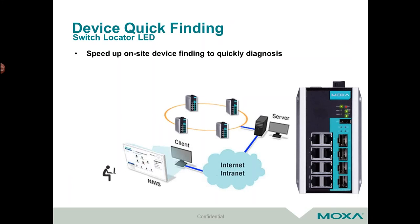Another thing NMSs can do that's really useful in troubleshooting is quick device finding. Say you have a whole cabinet or panel full of switches and one switch is acting up. On the NMS side, it's pretty easy to tell which switch has problems. But if you have to pull the plug from that switch in the cabinet, or you're working with someone remote at that cabinet, it's pretty hard to tell them which switch it is if they all look the same. With quick finding of devices, you can tell the switch to flash all the lights on the front panel, making it really easy to determine which switch needs to be changed or which one needs a cable change.